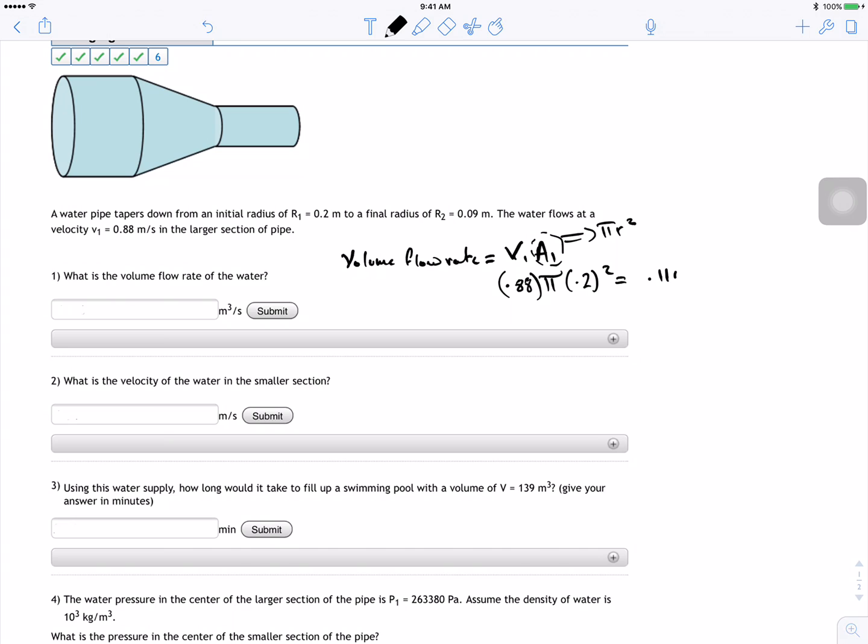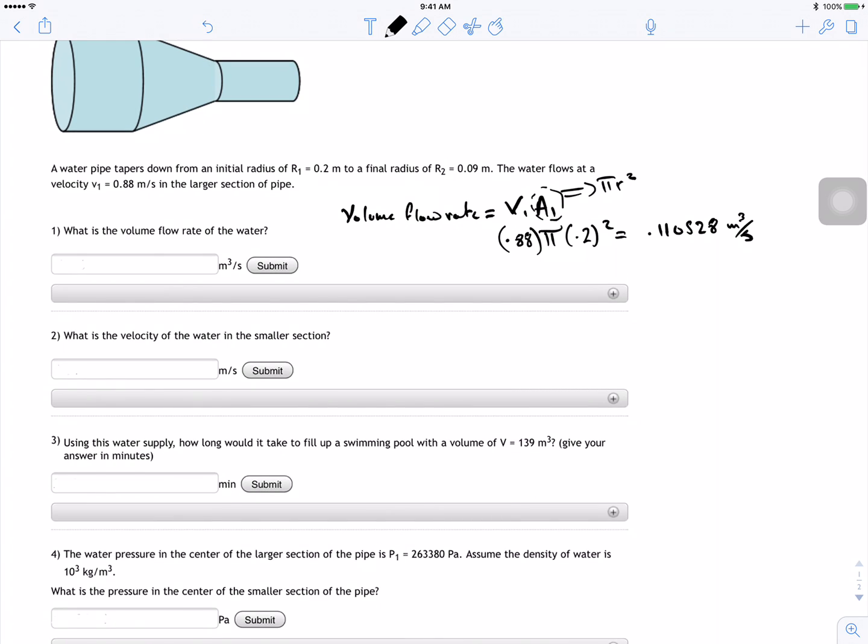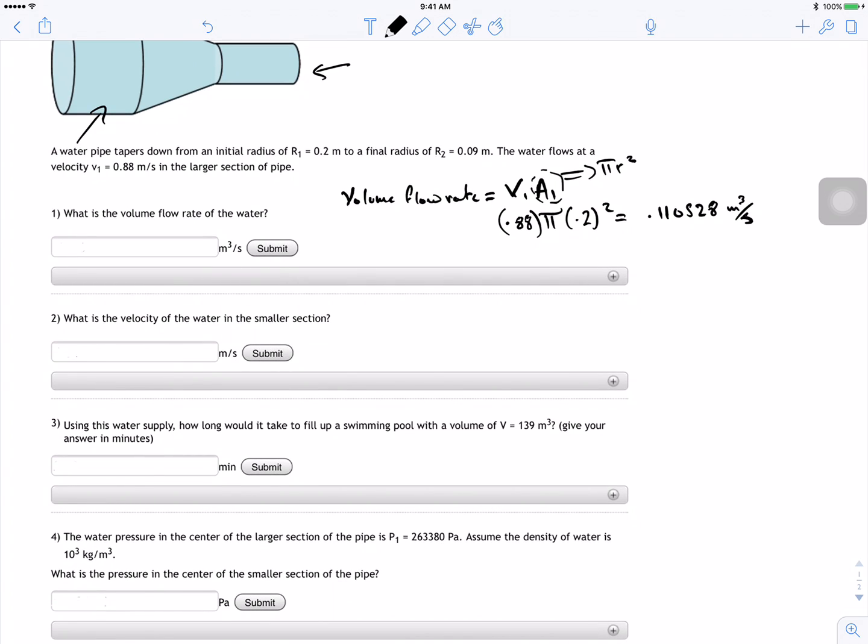For this guy I got 0.110528 meter cubed per second. Now what's the velocity of the water in the smaller section? So we know that the volume rate doesn't change—volume rate over here is the same over here.